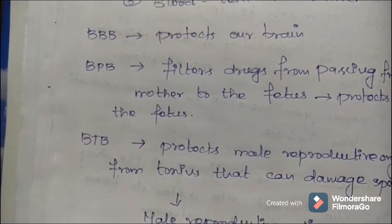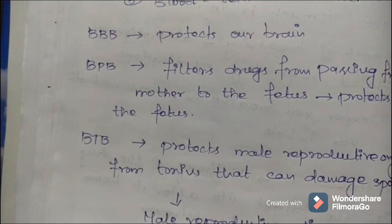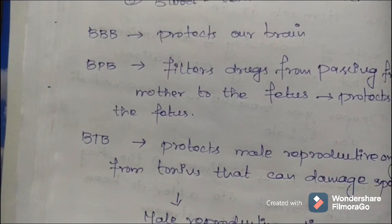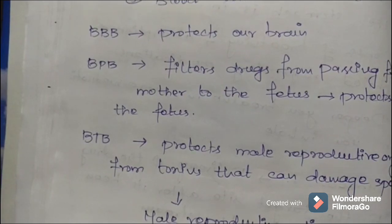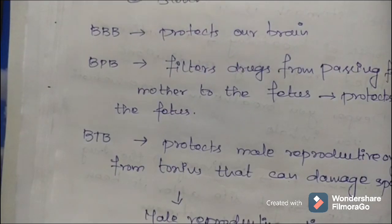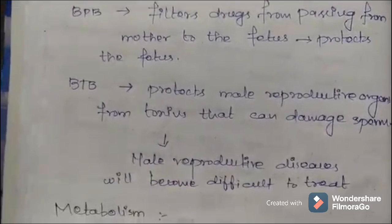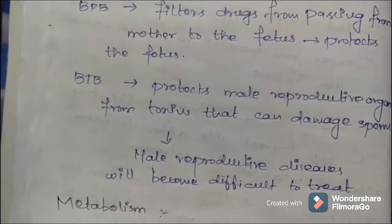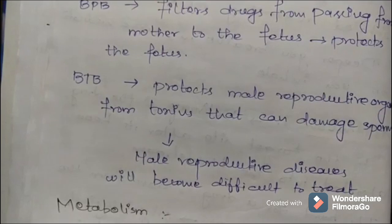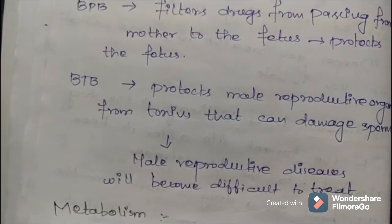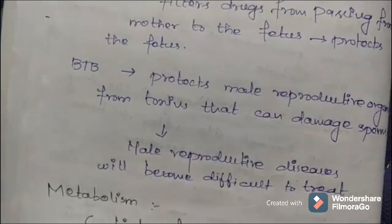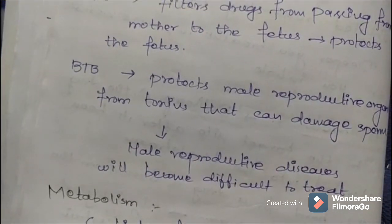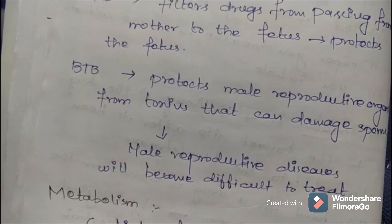The blood-placental barrier involves the placenta, an organ in pregnant women that provides nutrients and oxygen to the growing baby through the umbilical cord and removes waste products from the baby's blood. This barrier filters drugs from passing from the mother to the fetus to protect it. The blood-testicular barrier protects the male reproductive organs from toxins that can damage sperm, making male reproductive diseases difficult to treat.